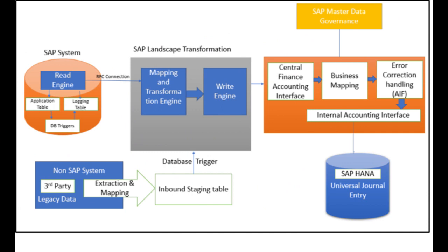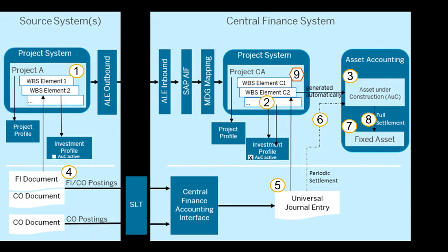Central Finance Landscape Architecture contains mainly three systems. The first system is the SAP ERP as the source system, where the main business processes run and FI and CO documents are posted. The second system is the SAP SLT as the integration platform, which reads and replicates the FI and CO documents. The third system is the SAP Central Finance as the target system on SAP S/4HANA, where the FI and CO documents are reposted. Central Finance is also able to replicate cost objects as a prerequisite for the FI and CO postings.